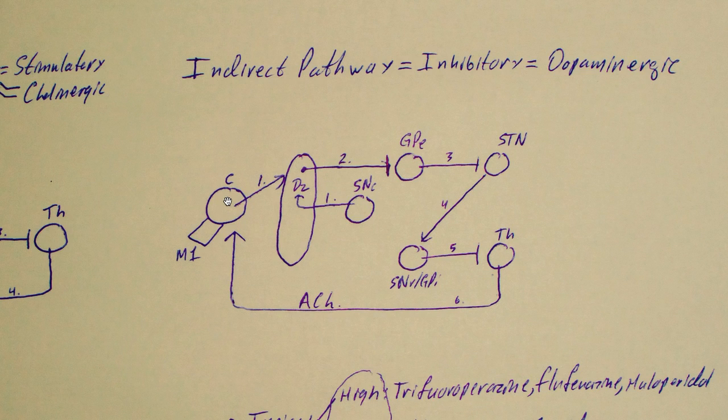Here we have the cortex sending a stimulatory signal to neurons in the striatum. These neurons have D2 receptors on them. They receive a dopamine signal from the substantia nigra, and when they do, the neurons of the striatum send an inhibitory signal to the globus pallidus externa.